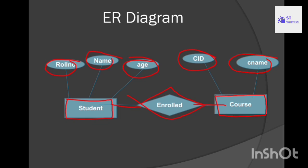The ER model is developed using three components: entities, attributes, and relations. We use the ER diagram to represent data and its relationships in a simple and easy-to-understand way. I hope it is clear — entities, attributes, and relationships. In the next class I will discuss entity types, attribute types, and relationship types. Please like, subscribe, and share. Thank you for watching.